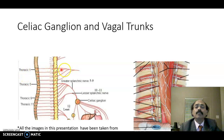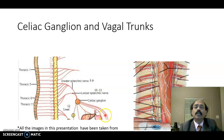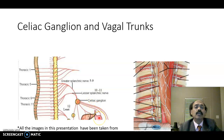Looking at the sympathetic innervation, it is from the celiac ganglion, which gets contribution from the greater splanchnic nerve from T5 to T9, and the lesser splanchnic nerve from T10 to T11. These are the pre-ganglionic fibers going to the celiac plexus, where there is a relay. From the celiac ganglion we get post-ganglionic fibers that provide innervation to multiple structures including the stomach and liver.